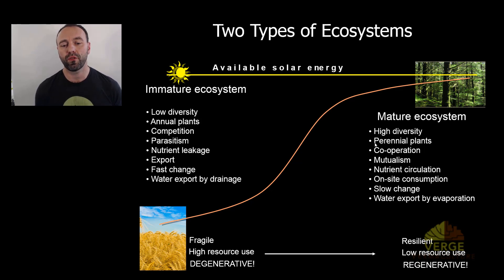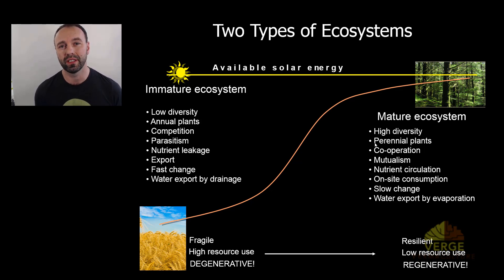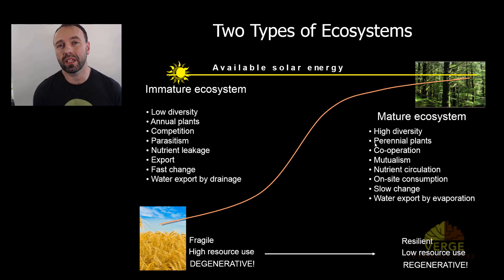These immature systems are fragile and require high amounts of resources. Notably, one calorie of food from the industrial system requires 10 calories of hydrocarbon to produce. If a coyote had to invest 10 of its own calories to get one calorie out, it would starve to death.